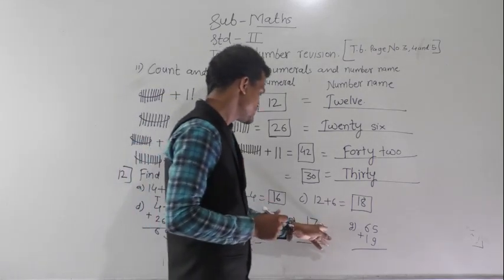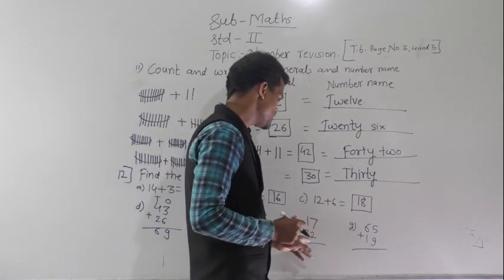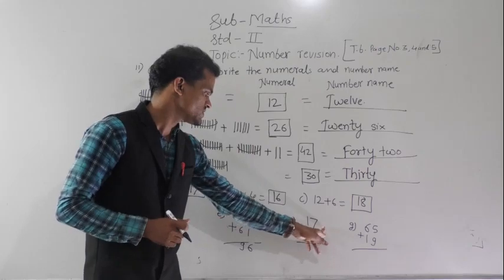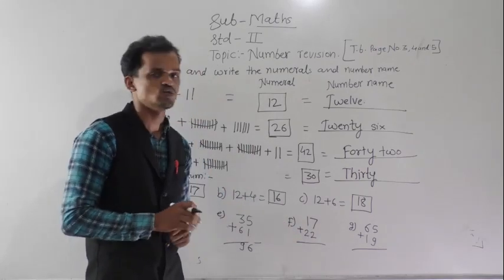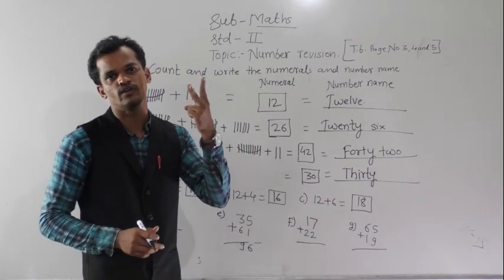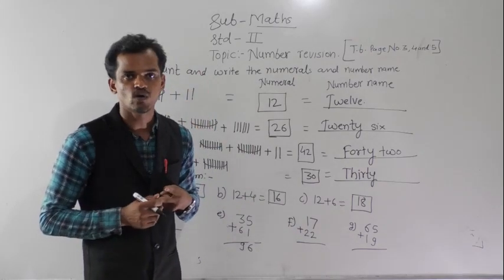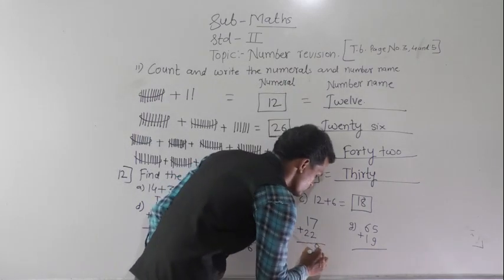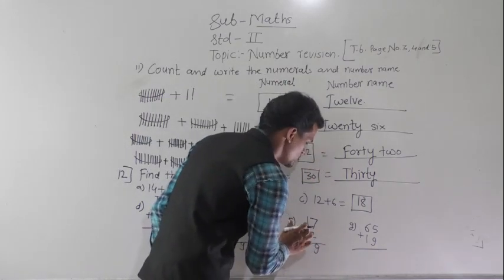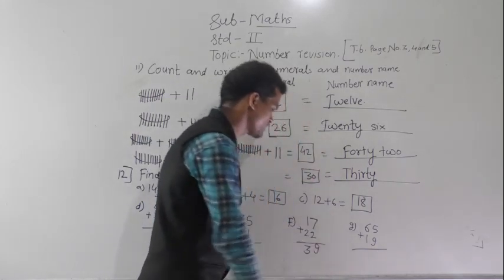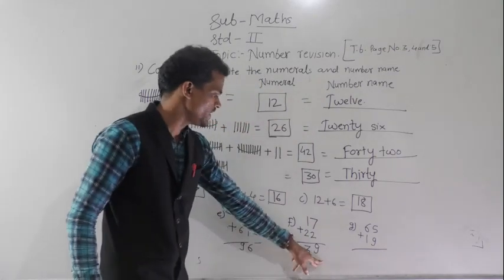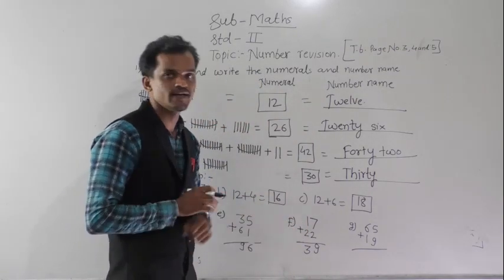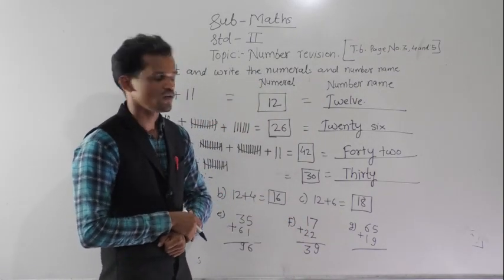Then 70 plus 22. In the tens column, 7 plus 2: after 7, count 2 fingers forward: 8, 9. And ones column: 1 plus 2 equals 3. Wait — so the sum of 70 and 22 is 92.